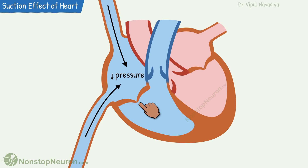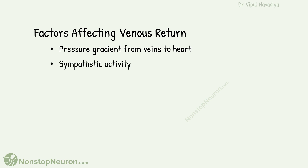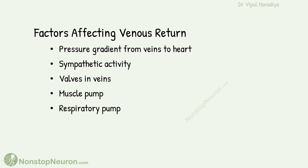To summarize: the pressure gradient from veins to the heart drives blood flow from veins to the heart. Sympathetic activity causes vasoconstriction and thereby increases venous return. Valves in veins counteract the effect of gravity and help in venous return. Activity in nearby muscles increases blood flow in the veins by a mechanism called the muscle pump or venous pump. Respiratory activity creates negative pressure in the thorax, which helps pull blood from the lower extremities. Finally, the suction effect by the heart itself also contributes to venous return.